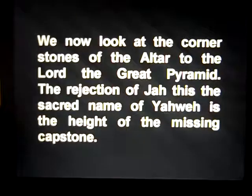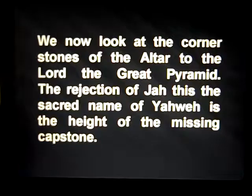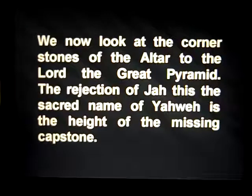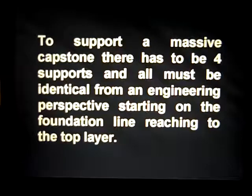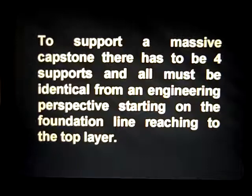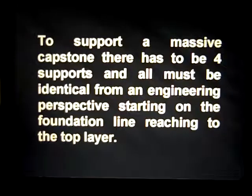We now look at the cornerstones of the altar to the Lord and the great pyramid. The rejection of Yah — the sacred name of Yahweh — is the height of the missing capstone. To support a massive capstone there must be four supports, all identical from an engineering perspective, starting on the foundation line reaching to the top layer.